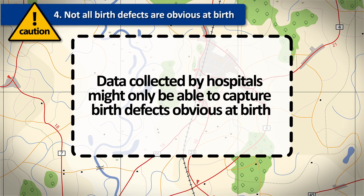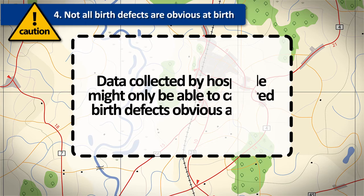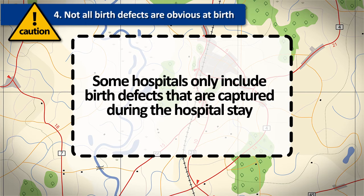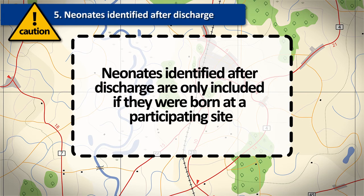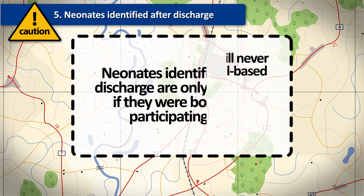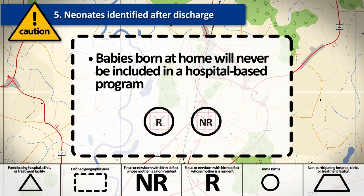Fourth, data collected by hospitals about birth defects might only be able to capture birth defects obvious at birth. Because neonates are typically discharged from delivery hospitals within days following birth, some hospital-based programs include only those birth defects captured during the hospital stay, unless a longer age of inclusion is specified. Finally, neonates identified after discharge are only included if they were born at a participating site and met the case inclusion criteria. Babies with a birth defect born at home will never be included in a hospital-based program, regardless of the time of diagnosis.